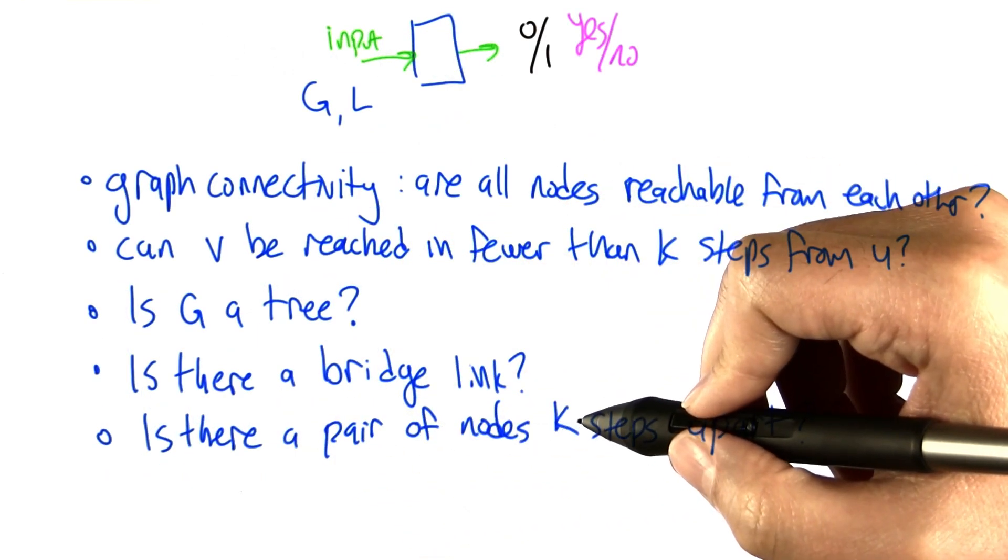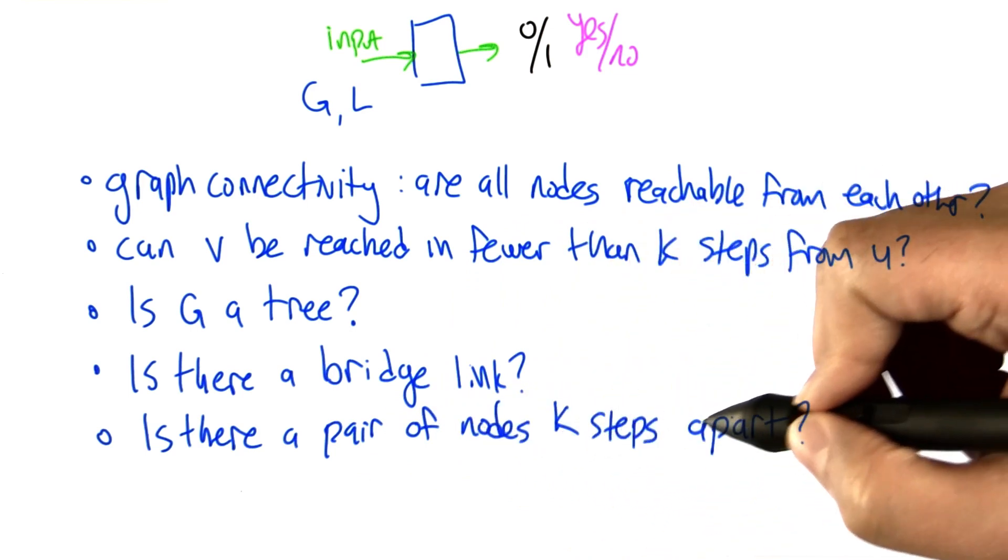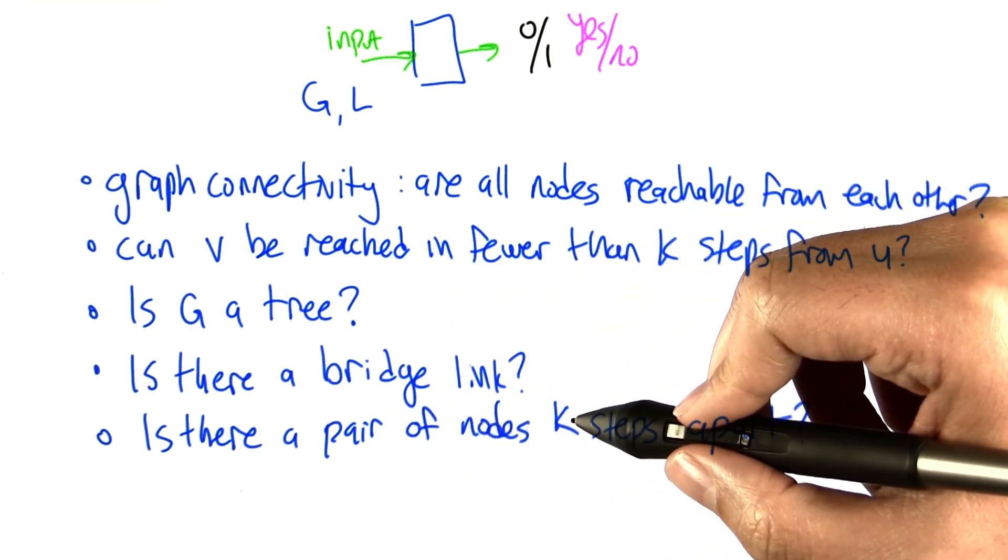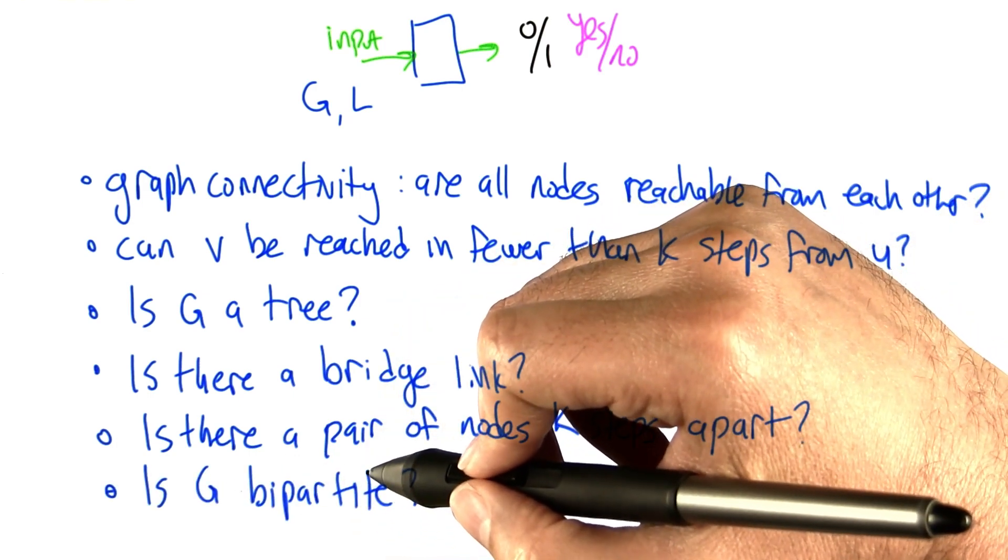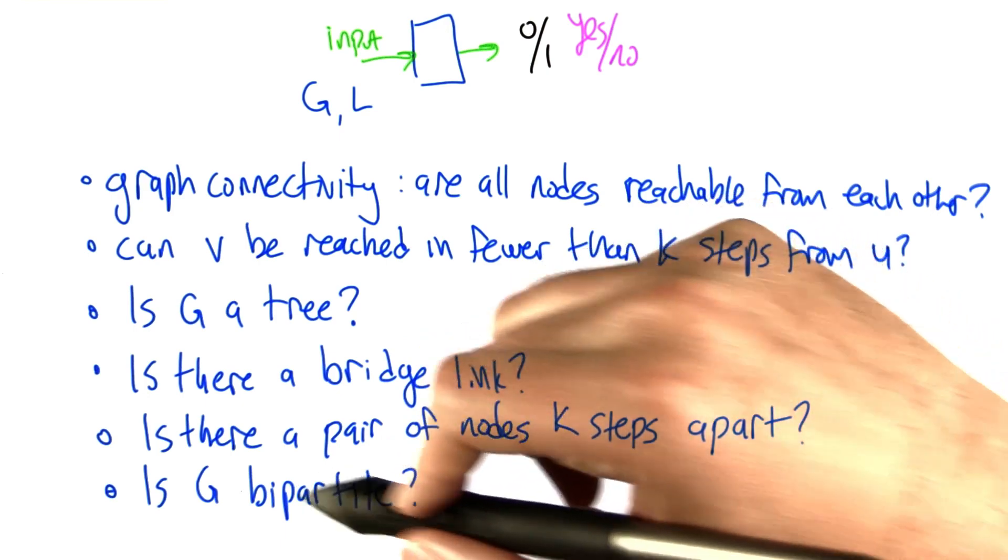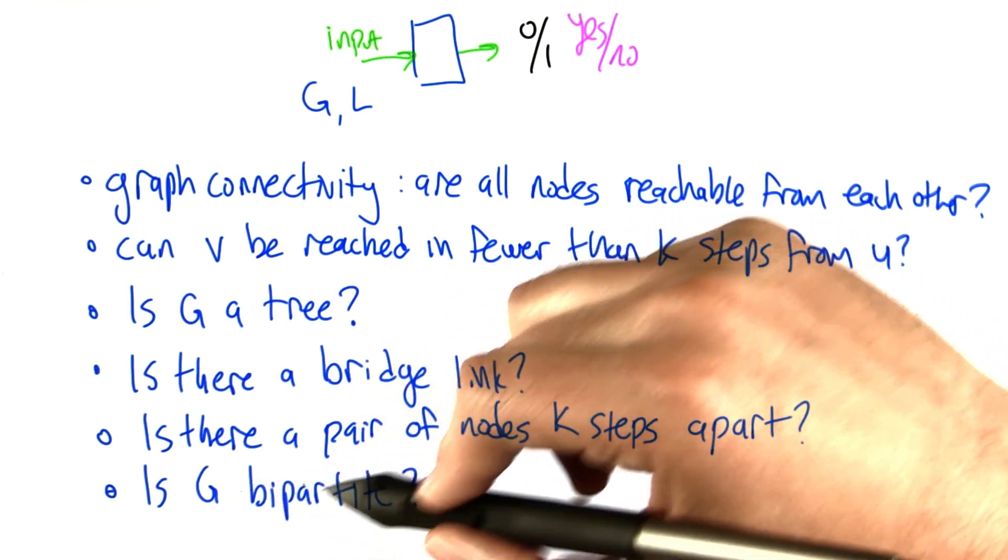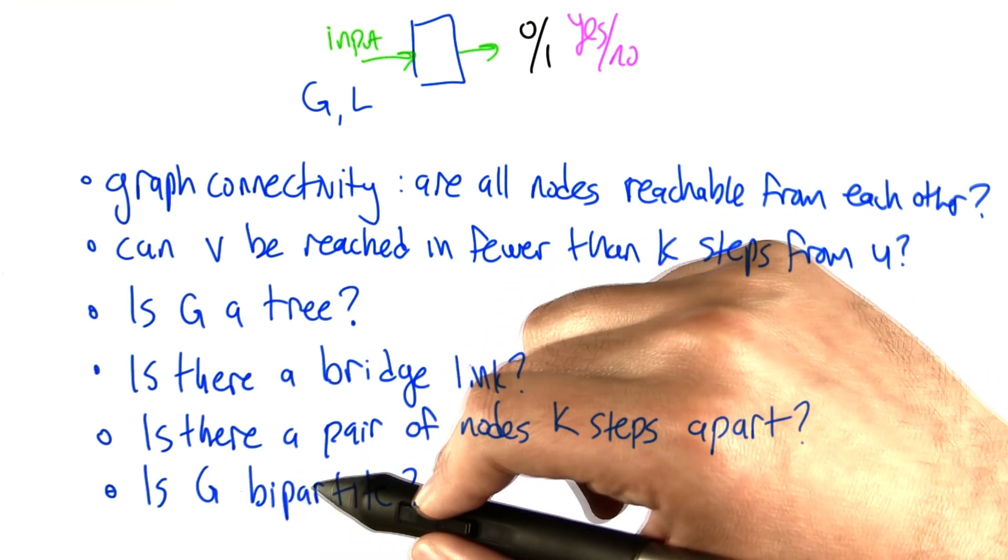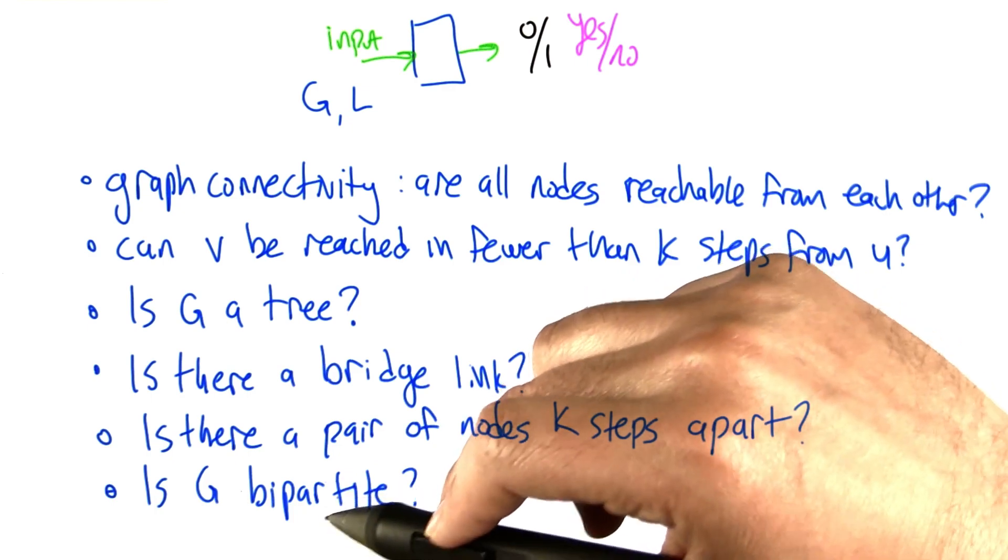Given a graph and a number k, is there a pair of nodes that are k steps apart, that the shortest path between them is no more than k steps? Another question is g bipartite. This was a homework problem, or there was a closely related homework problem, where you can take a graph and try to work out whether it is separatable into two sets of nodes with edges only going between the sets.